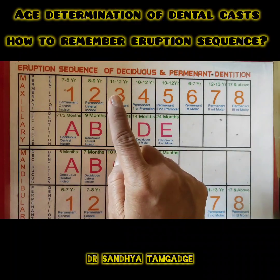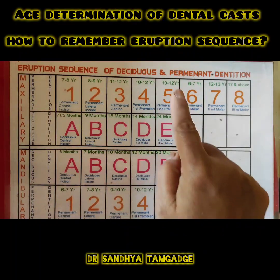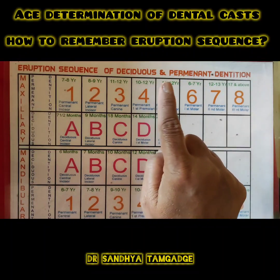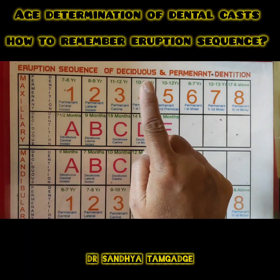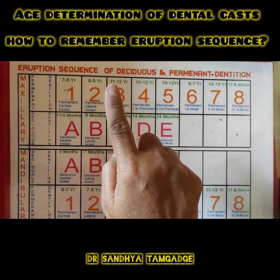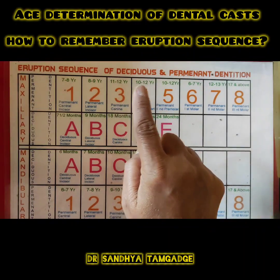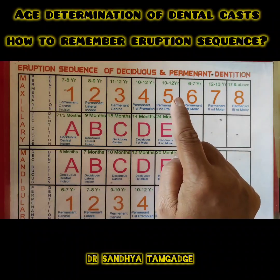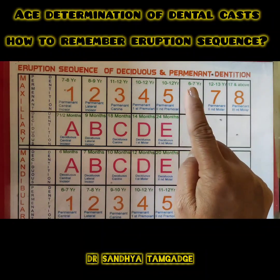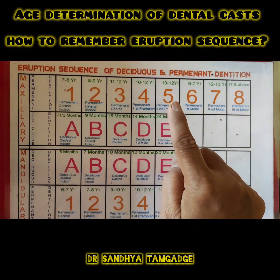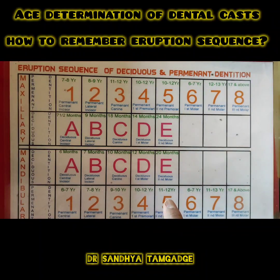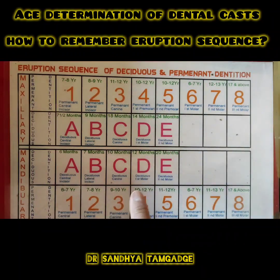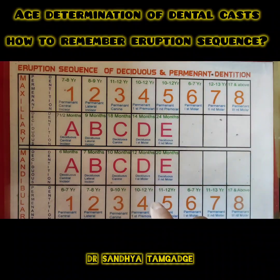The next batch is the premolar batch, erupting around 10 to 12 years. The first premolar erupts at 10 to 12 years and the second premolar at 11 to 12 years. Variations can occur, and in some patients canine and premolar eruption may overlap.